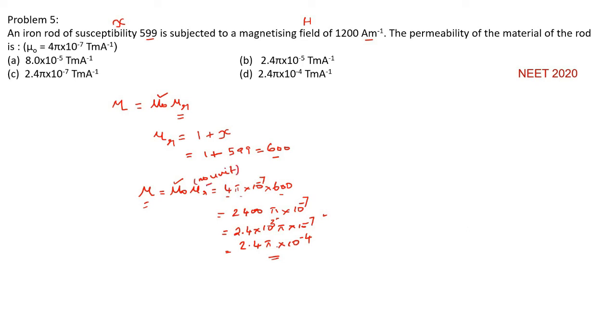Unit is tesla meter per ampere. Option D is the correct answer. 2.4 pi into 10 to the power of minus 4 tesla meter per ampere. We got it here, 2.4 pi into 10 to the power of minus 4 tesla meter per ampere.